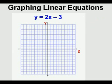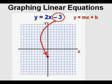Let's look at an equation in slope-intercept form, where the y variable is by itself on one side. This is y equals 2x minus 3. Slope-intercept form is y equals mx plus b, where m is the slope and b is the y-intercept. I like to think of b as 'beginning' for the y-intercept. So we take negative 3, which is b, and mark it on the y-intercept.